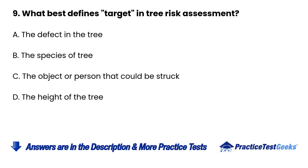Question 9. What best defines "target" in tree risk assessment? A. The defect in the tree. B. The species of tree. C. The object or person that could be struck. D. The height of the tree.